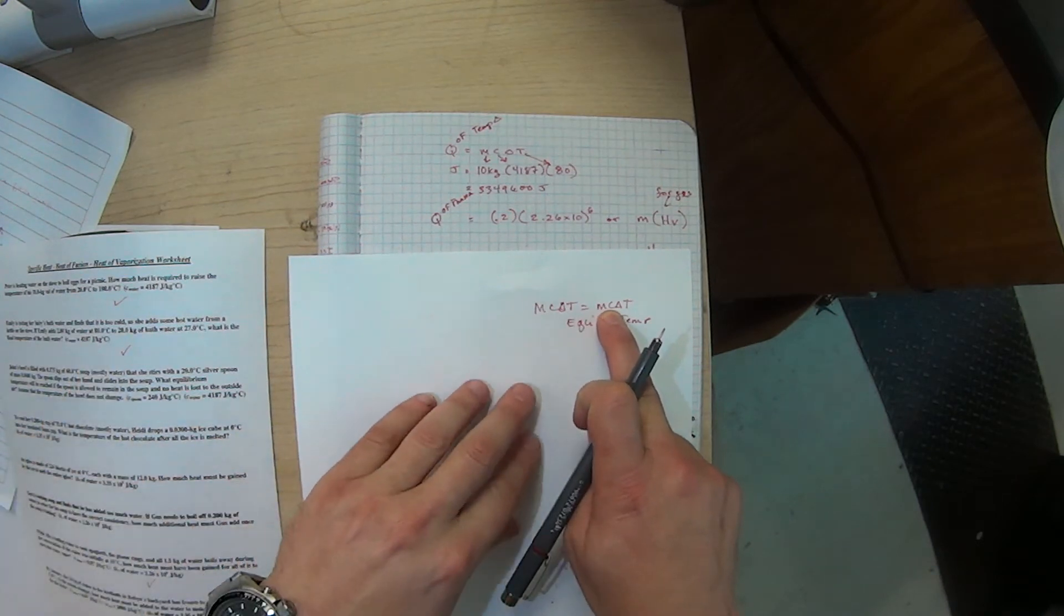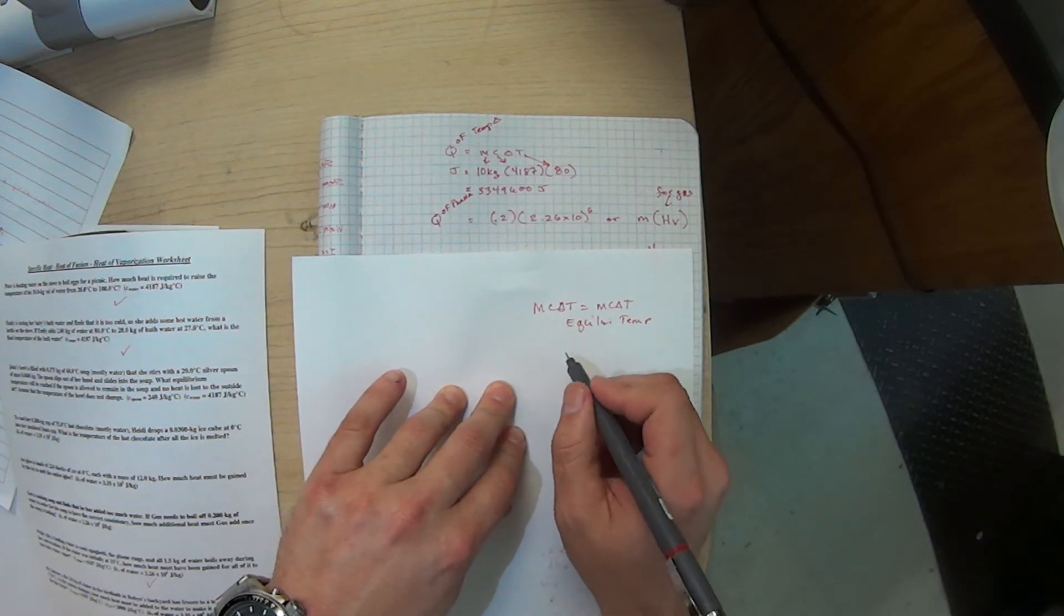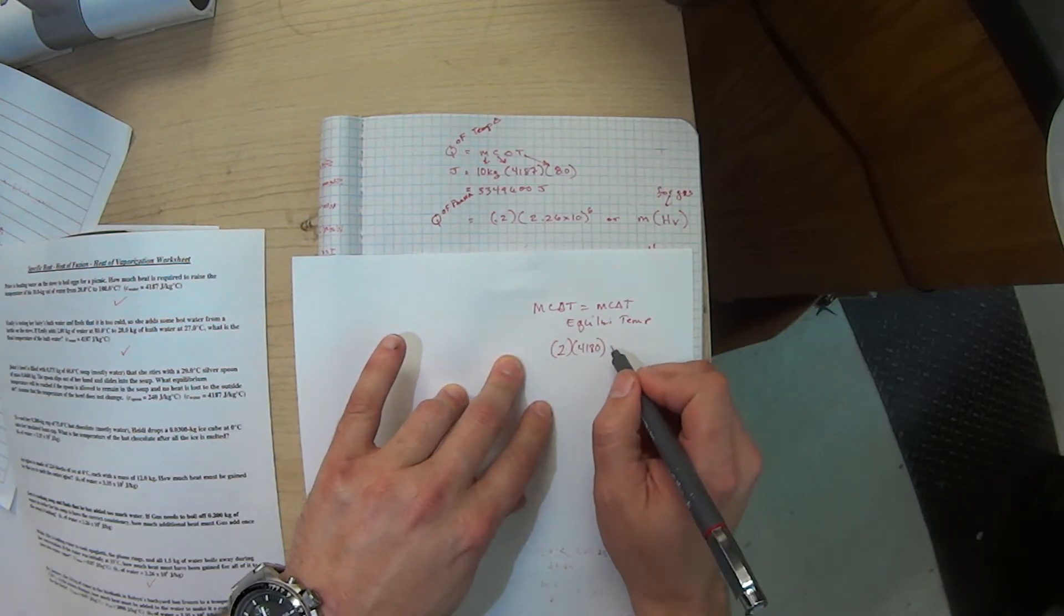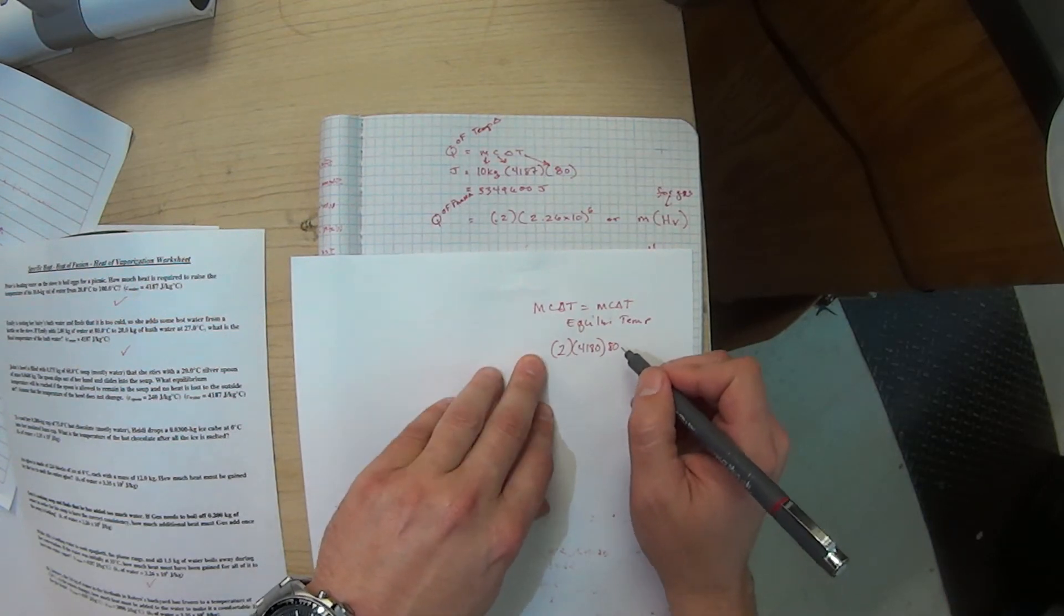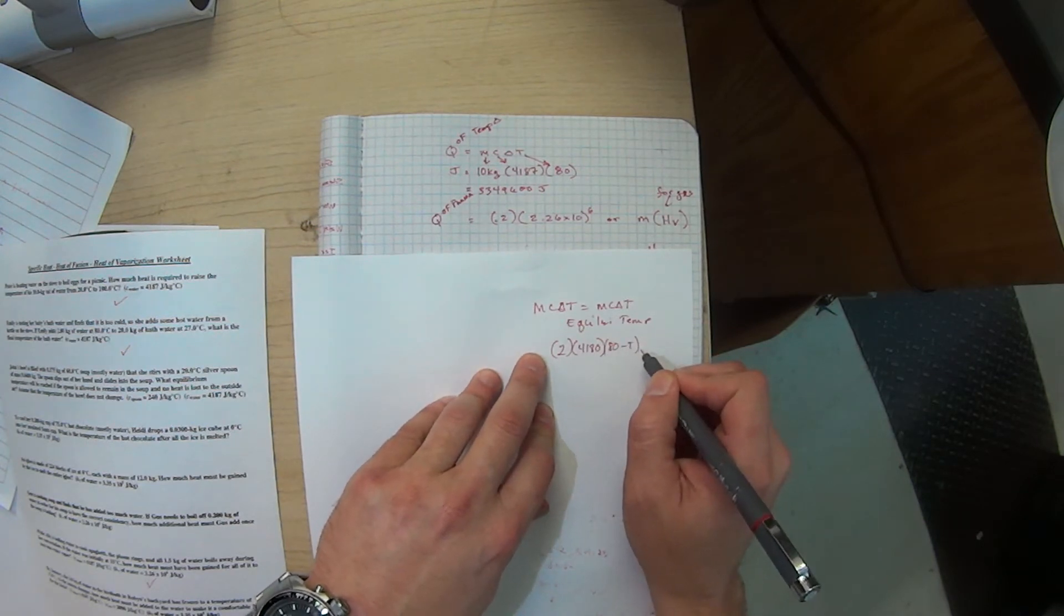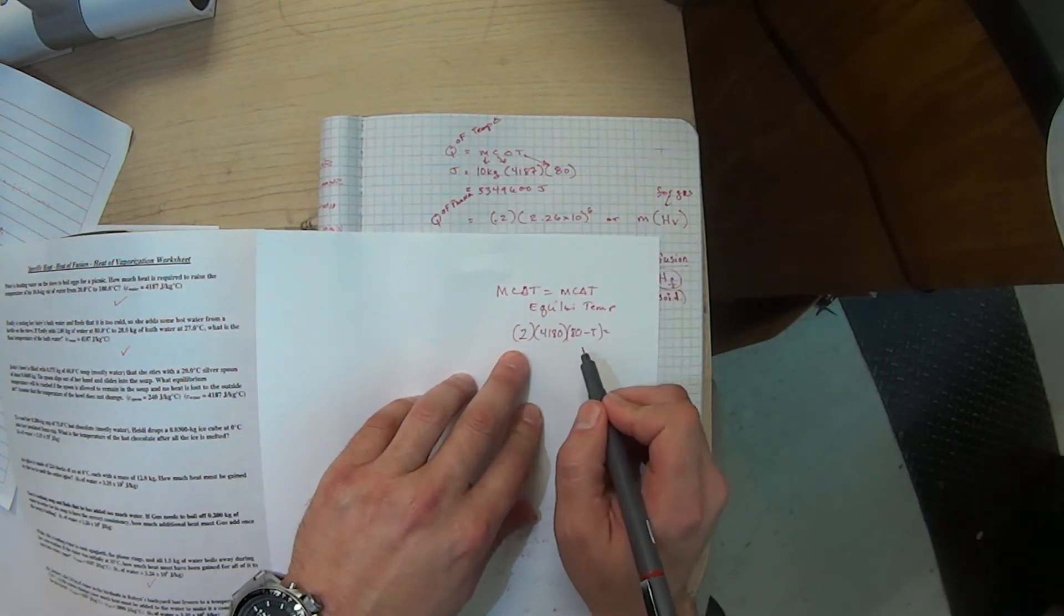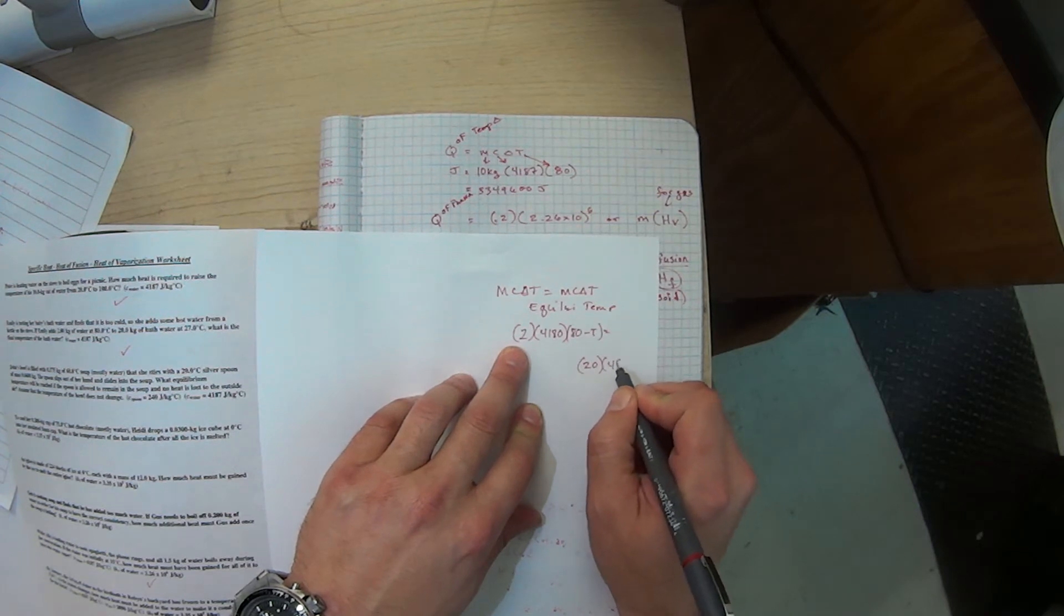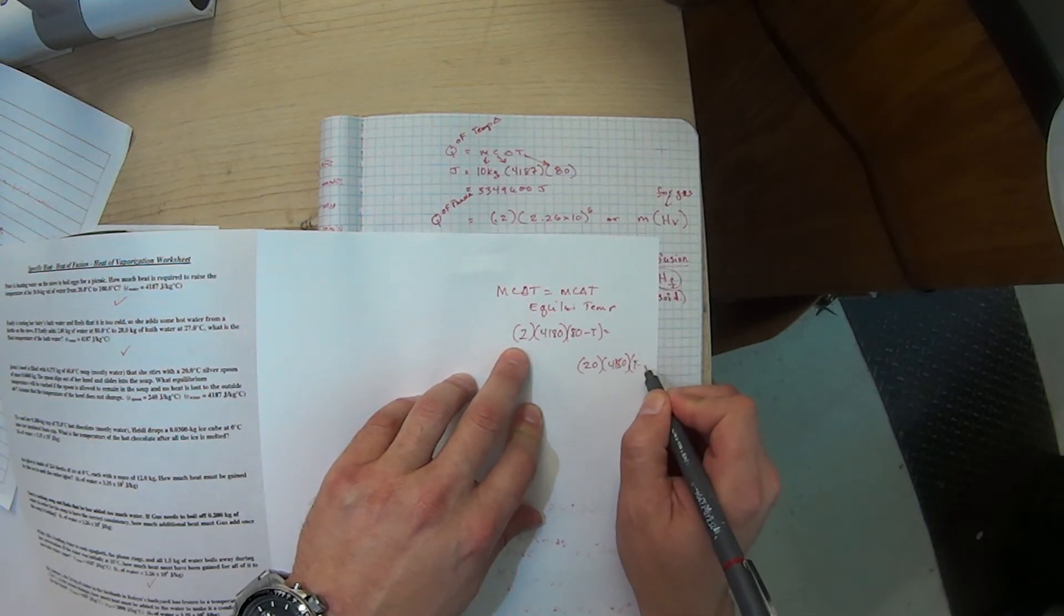When you see that, you're going to go straight to this formula. It's the mass, the substance, and half of the change, and another mass and another substance and another half of the change. In Emily's particular problem, she is taking hot water, two kilograms of hot water. We already know water was 4180, and the two kilograms of hot water are at 80 degrees. But she doesn't know the equilibrium.